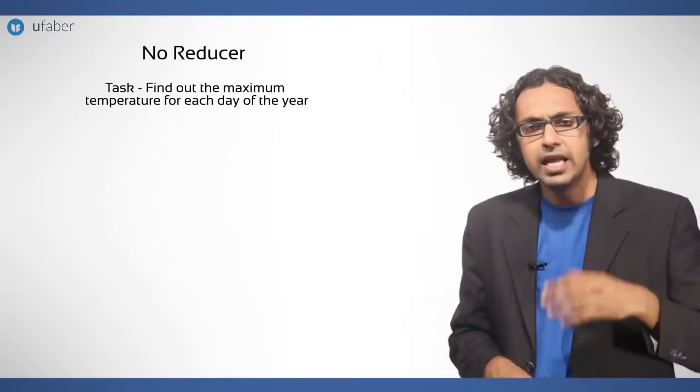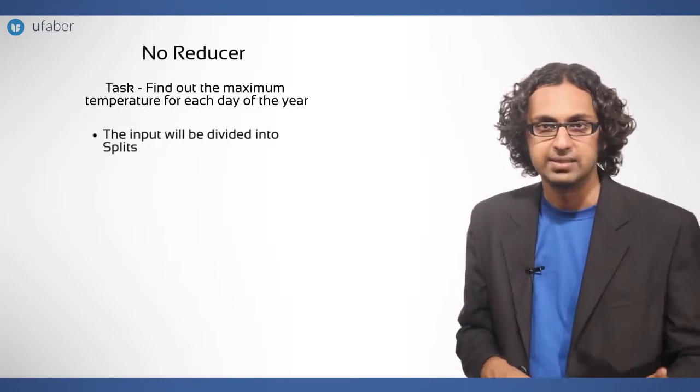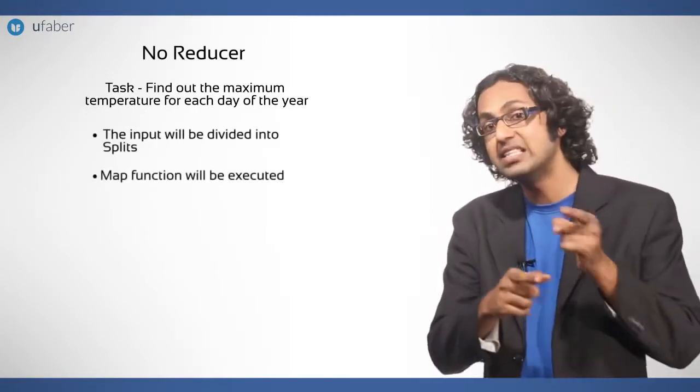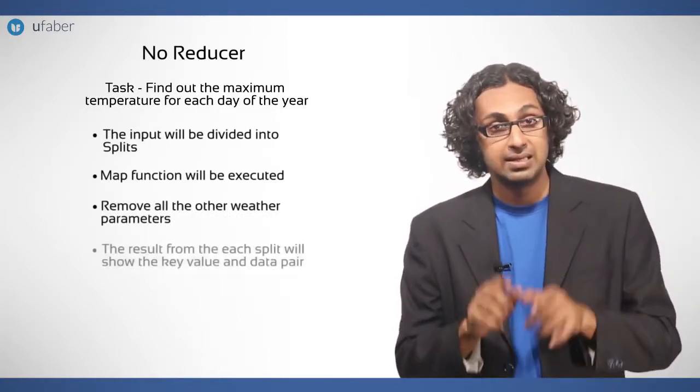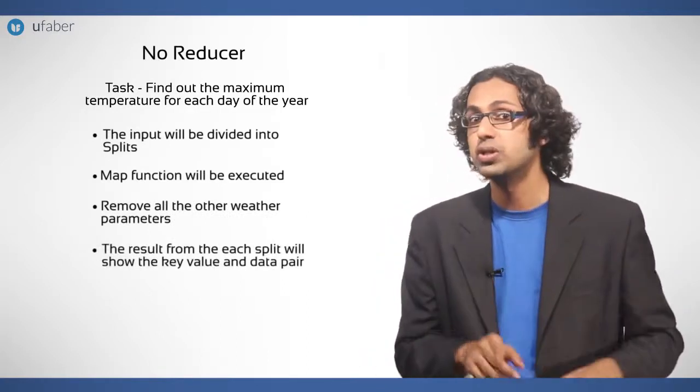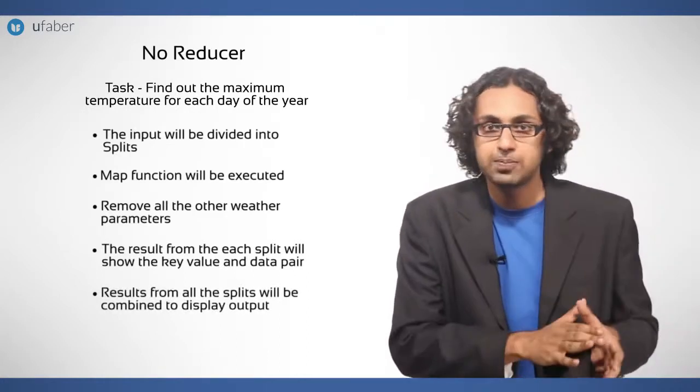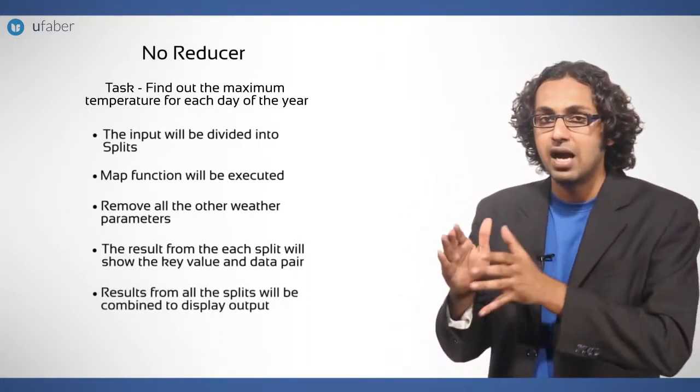In this case, input data will be divided into splits. And map function will be executed on each split to remove all the other weather parameters. The result from each split will show the key value and data pair. Results from all the splits will be combined to display output.